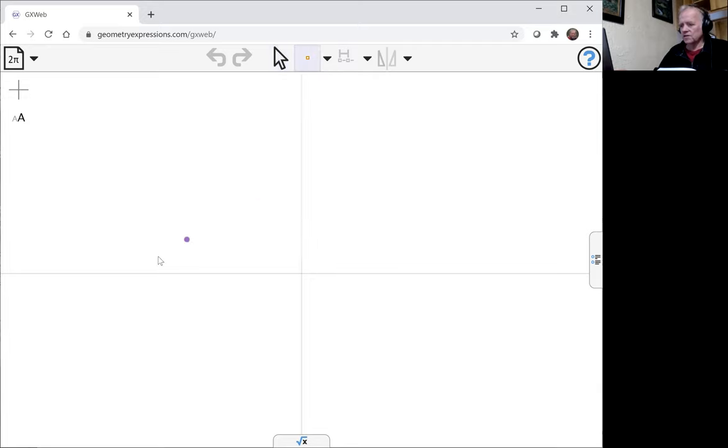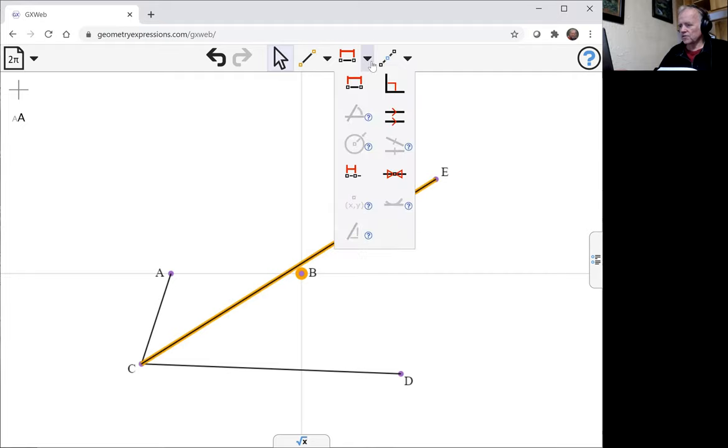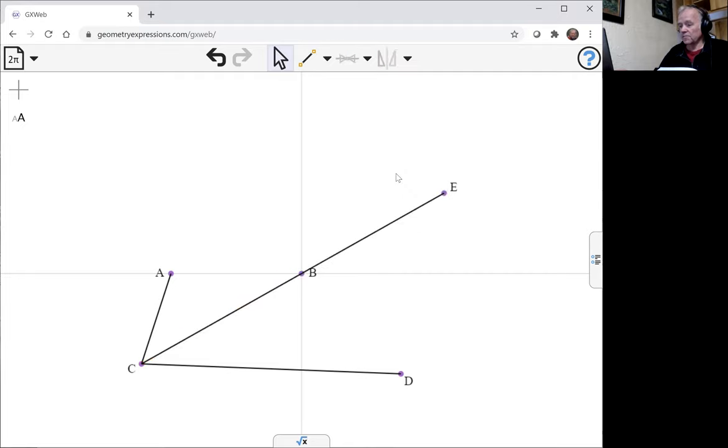So let me create a couple of points, one here and one here, and the four-bar linkage is going to look like this. We're going to go down to here, go out to here, and we're going to come along with a line that goes through this fixed point B, so I'm going to use the incidence constraint to make that happen.